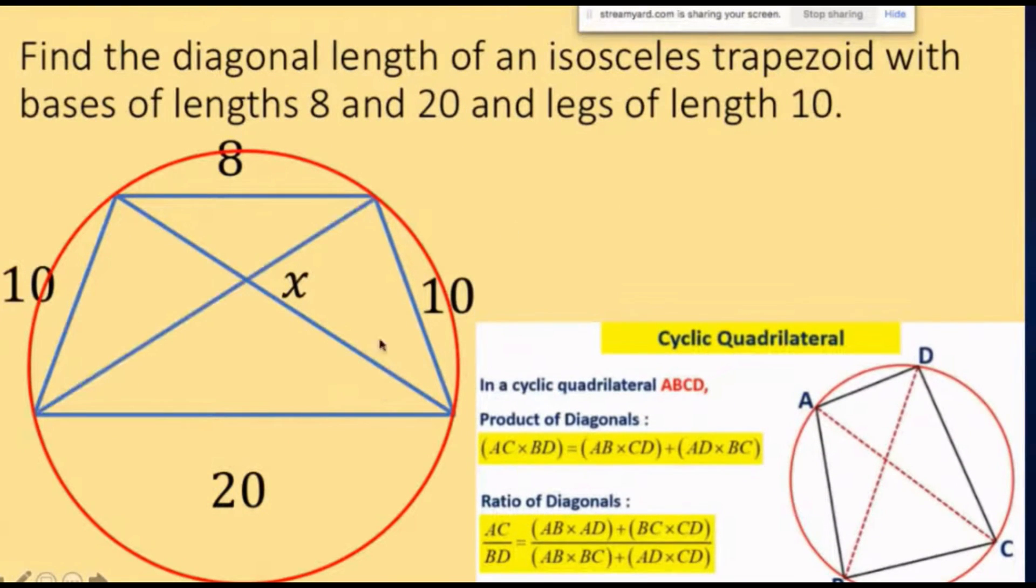If you let this diagonal be x, the other one is also x. The product of the diagonals therefore is x squared. That is equal to the product of the opposite sides: 8 times 20, plus the other pair of opposite sides, 10 times 10.